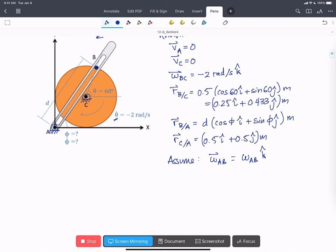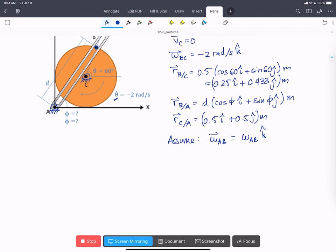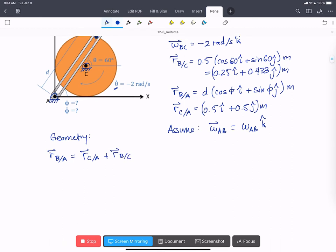So one of the first things we need to do is figure out what phi is at this instant. So we're going to do a little geometry. What we know is that R of B with respect to A has to be equal to R of C with respect to A plus R of B with respect to C.